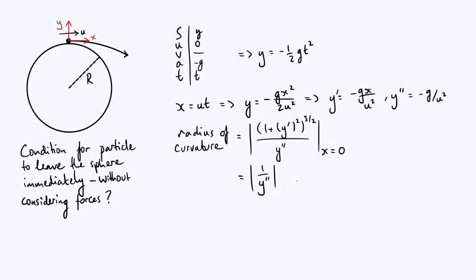y double dash is minus g over u squared, so we do 1 over it, flip it upside down, and take the modulus, which makes the minus sign disappear. So your radius of curvature at the beginning of the trajectory is u squared over g.